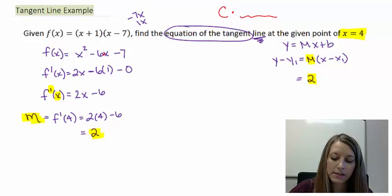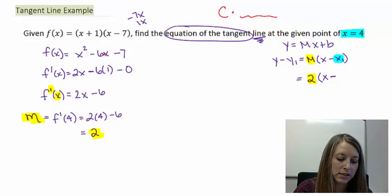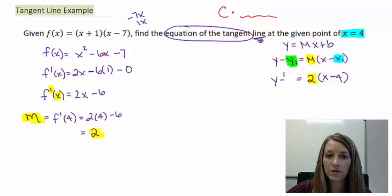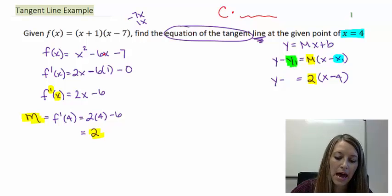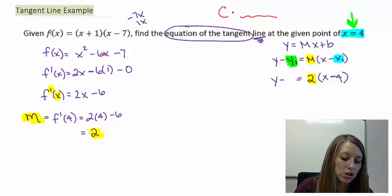The other thing that we need to substitute in is a point. I need to substitute in my x value. Well, my x value is almost always given to us, so our x value here is guaranteed to be 4. But I also need to substitute something in for my y value, and that was not given to us.